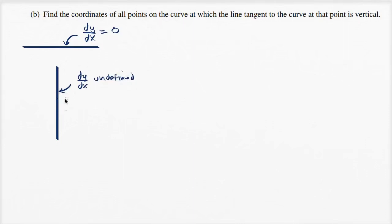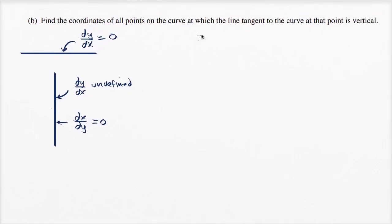Another way to think about it is: you could say that the change in x with respect to change in y — notice we took the reciprocal — so the derivative of x with respect to y is equal to zero. Because your y can change, but as your y changes, your x does not change. So, can we use this insight about vertical lines to find the coordinates of all points on the curve at which the tangent line is vertical?